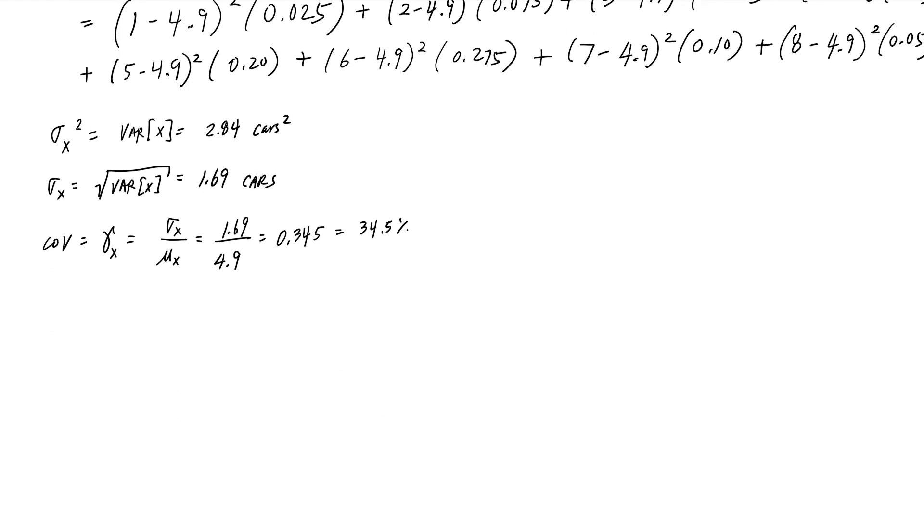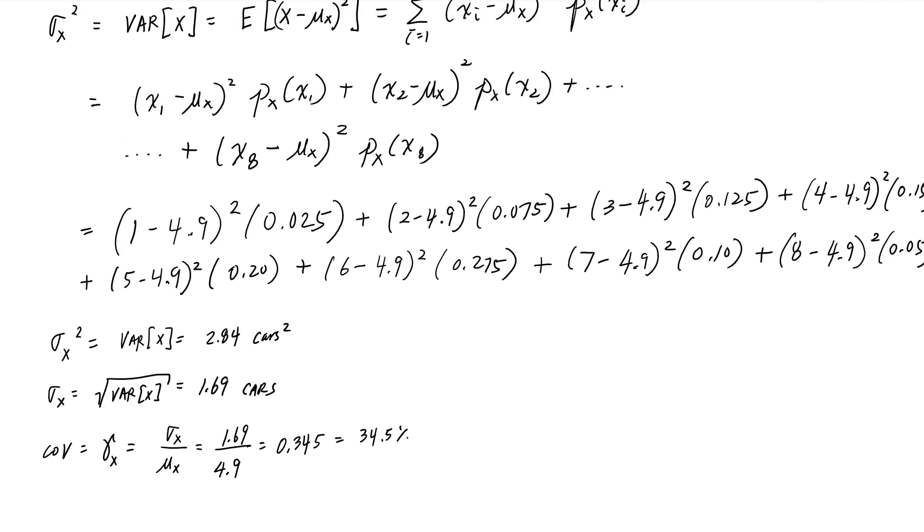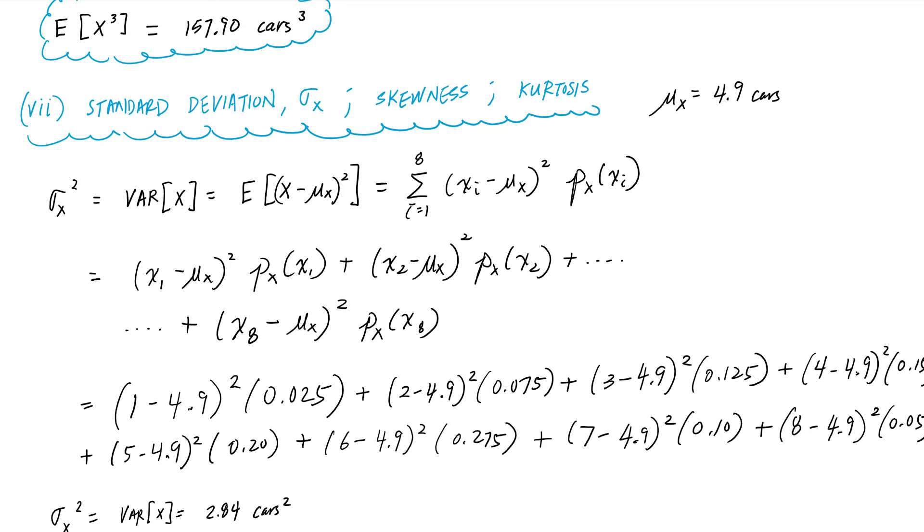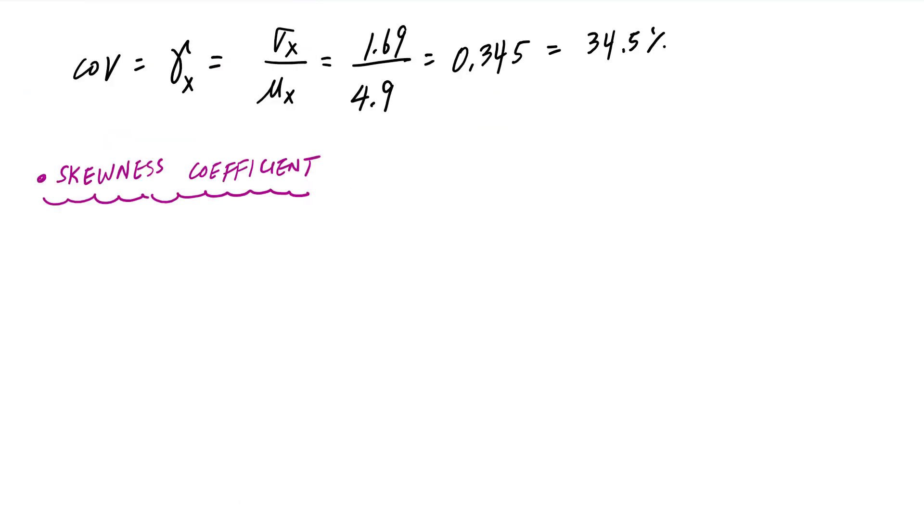So that was moments about the mean. The second moment in particular gave us this variance. And then I can look at the skewness coefficient, which is this expected value about the mean, divided by this cube of the standard deviation. So we're looking at the third moment.